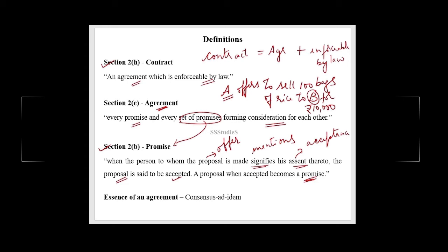When A agrees to sell 100 bags of rice to B and B agrees to purchase 100 bags of rice from A for Rs. 10,000, there is an agreement. When does this agreement become a contract? An agreement becomes a contract when it is enforceable by law. If on the due date A fails to sell the 100 bags of rice, B can go to the court of law and enforce this agreement. As such, it becomes a contract.